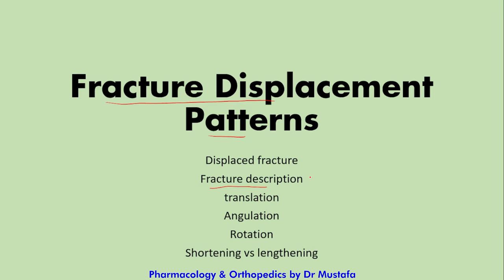We mentioned at the beginning of this class the types of fractures and the different factors affecting them. One of those factors was displacement — we have undisplaced fractures and displaced fractures. The displaced fractures have different displacement patterns that will be discussed in this video: translation, angulation, rotation, shortening, and lengthening.